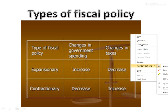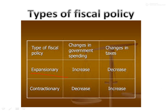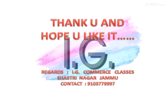Looking at the types of fiscal policy through a diagram or table: in expansionary policy, government spending increases because the economy needs more money, and taxes decrease. In contractionary policy, government spending is reduced and tax rates are increased. Hope this is clear.